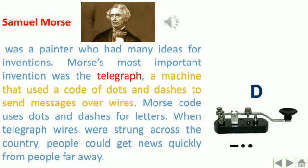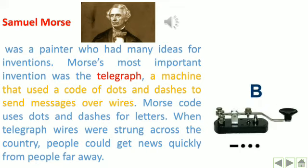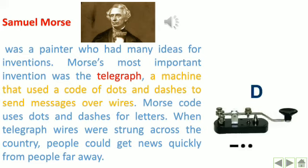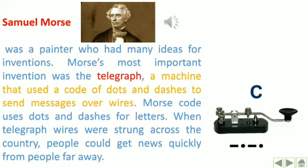In this machine, the short press is for a dot and the long press is for a dash. For example, dash-dot-dot-dot means the letter B, and dash-dot-dash-dot means the letter C.